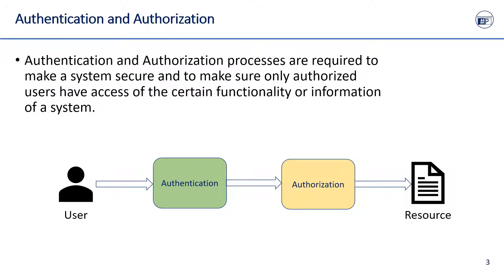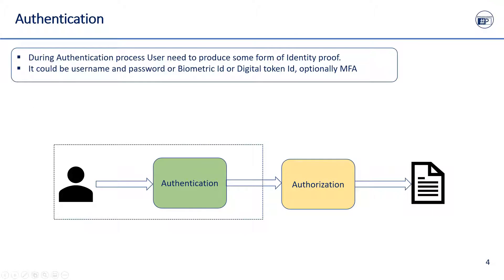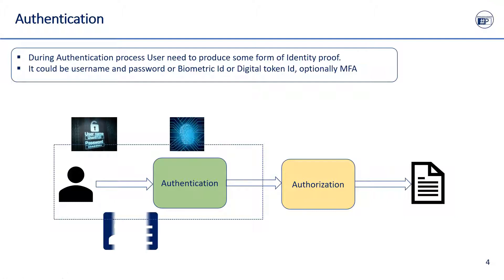Authentication and authorization processes are required to make a system secure and to make sure only authorized users have access to restricted resources. Authentication is the process to determine the identity of the user trying to access the system. The user has to present some evidence to prove their ID, like username and password, biometric ID, or digital key, which is recognized by the system and grants access permission.